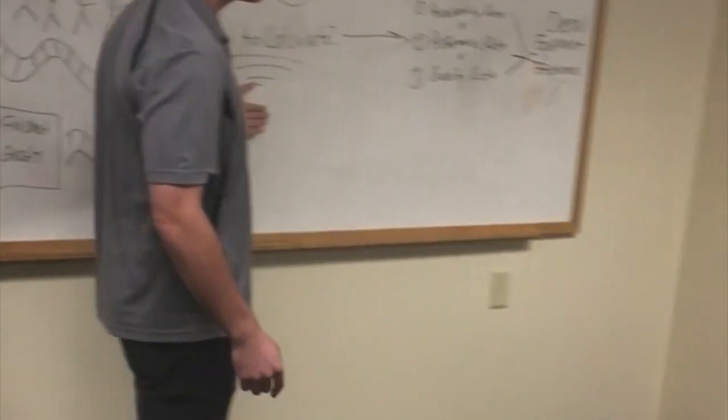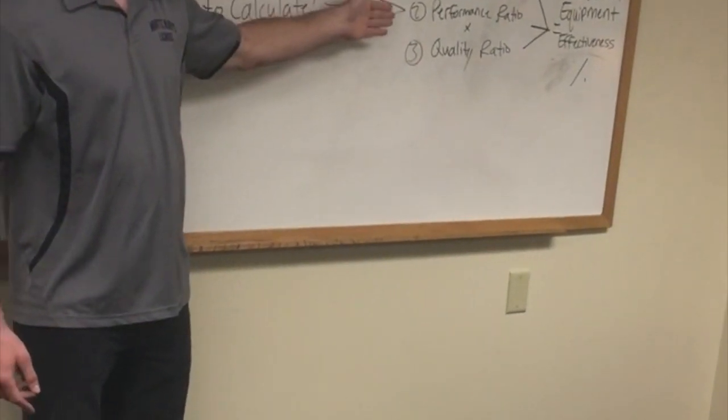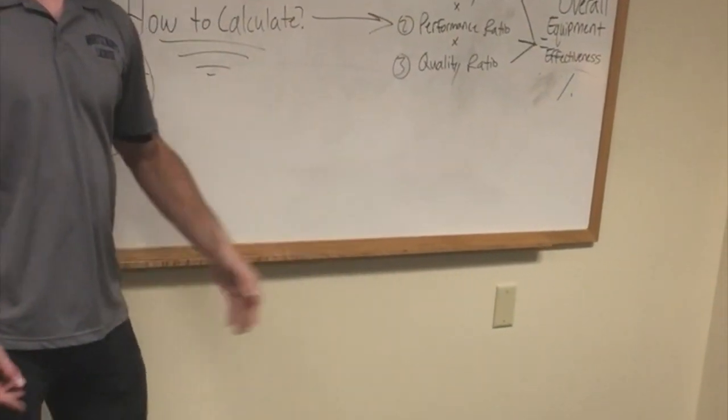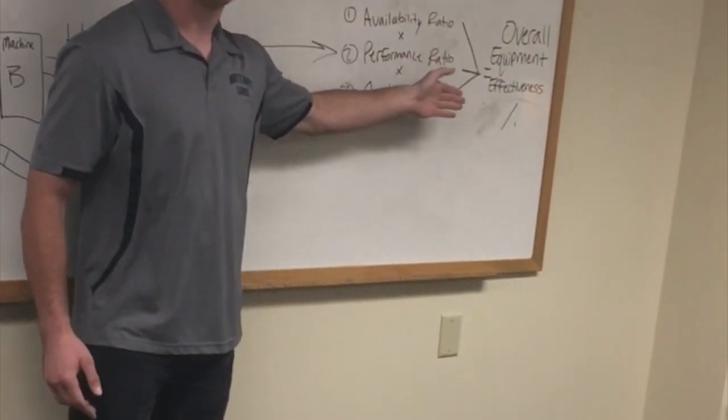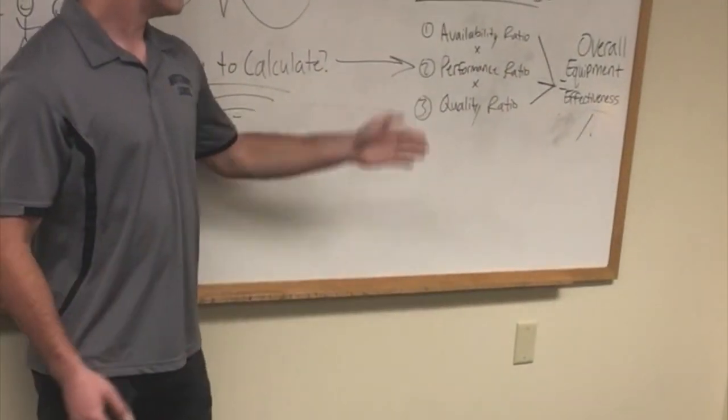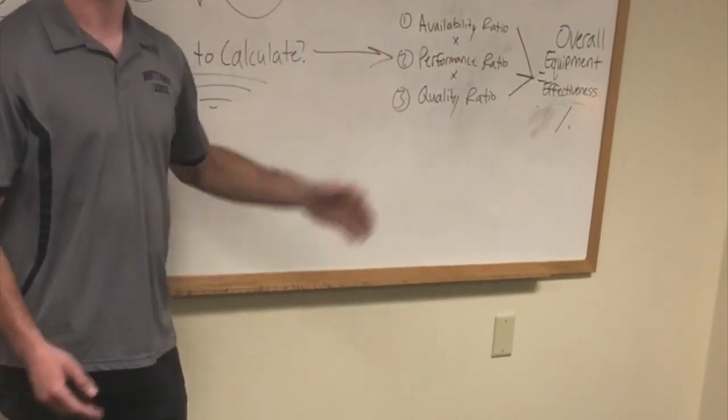So how do we calculate this? It will be through three ratios, the availability ratio, the performance ratio, and the quality ratio. Now multiplying these together will create our overall equipment effectiveness, which is most of the time much less significant than each individual ratio that we calculate first.